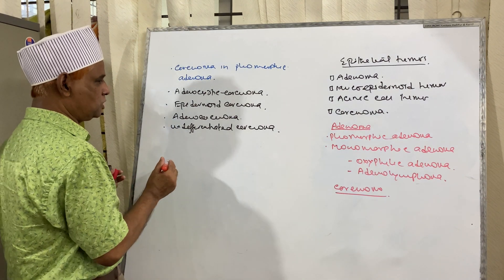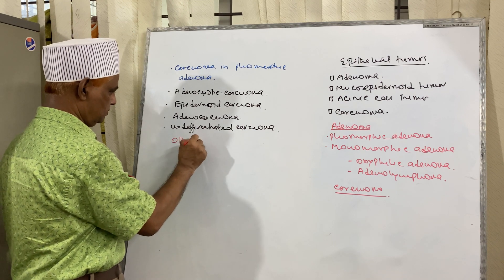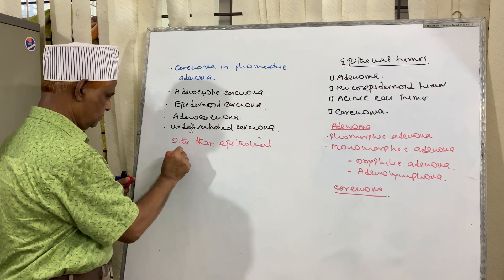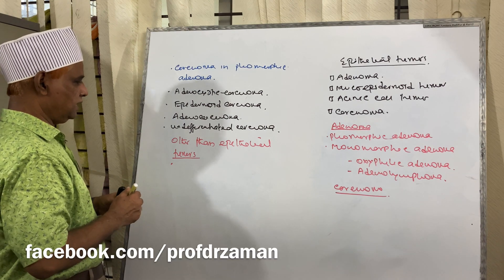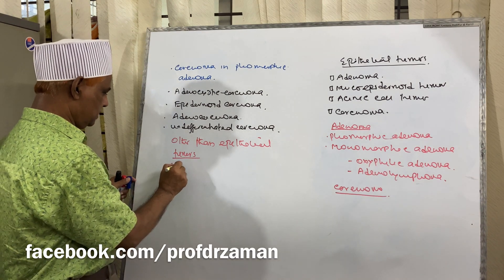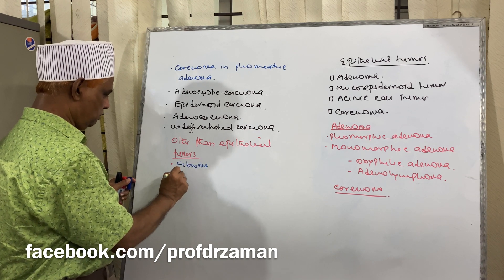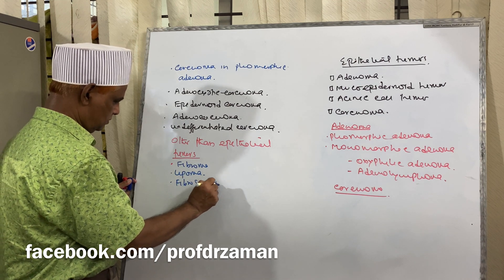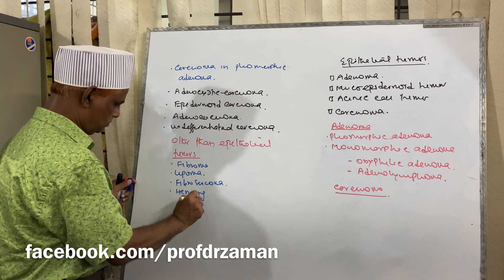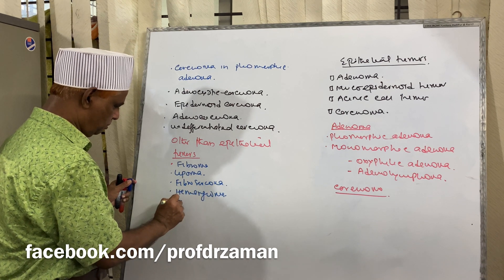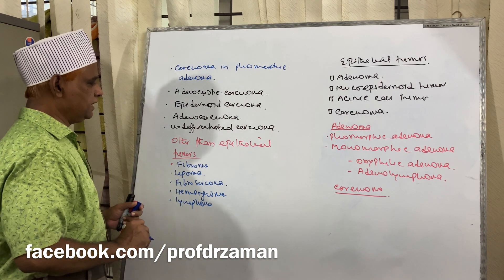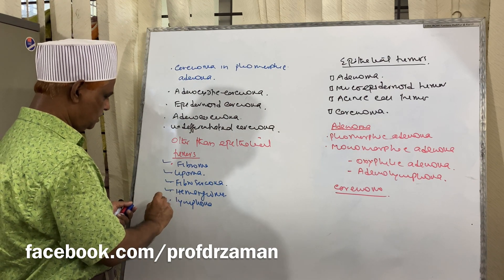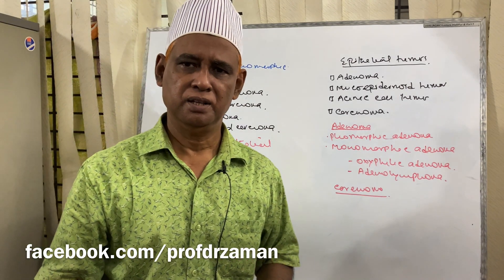Other than epithelial tumors may be Fibroma, Lipoma, Fibrosarcoma, Hemangioma, and Lymphoma. These are the different tumors that may occur in the salivary gland.